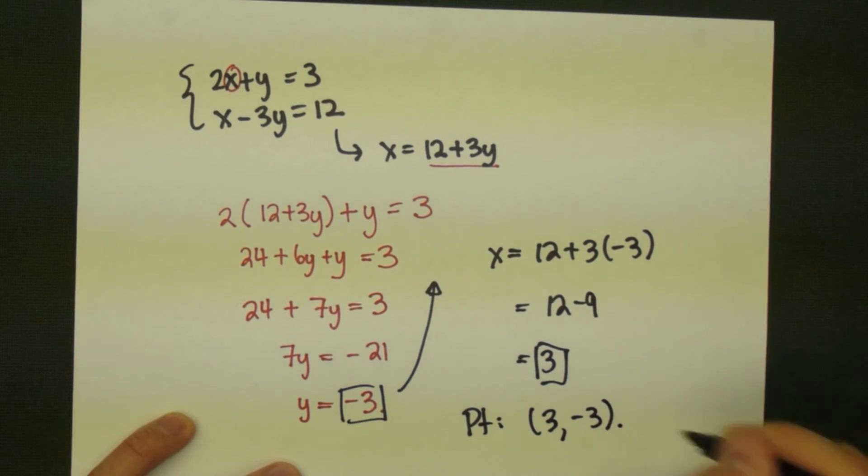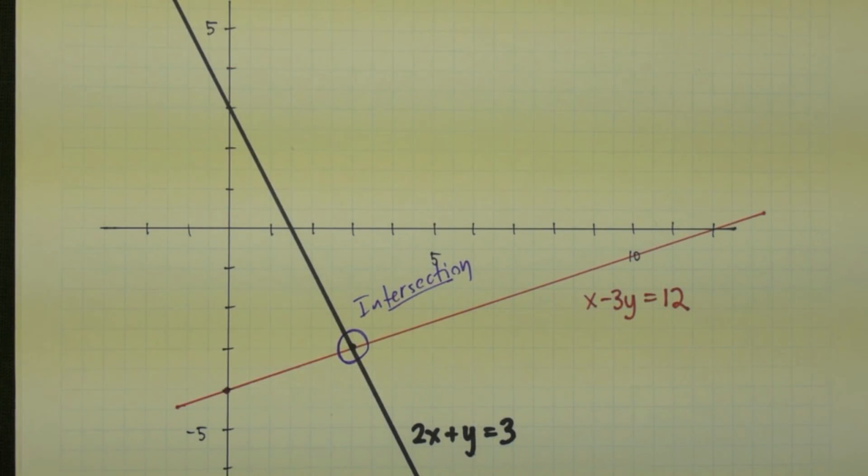This means the point of intersection is (3, -3).